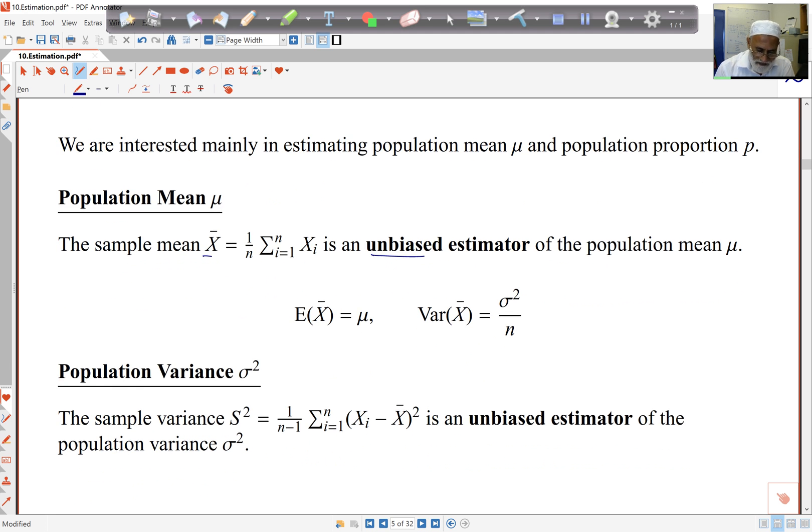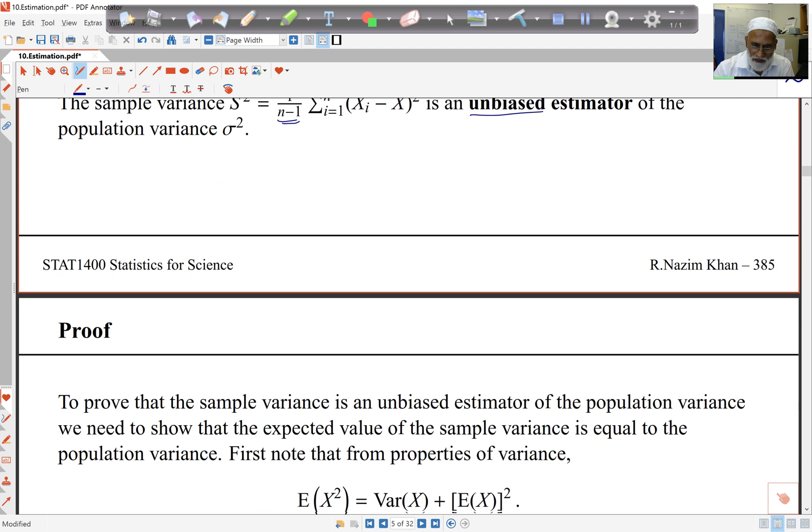The other one we know is the sample variance, 1 over n minus 1 times the sum of Xi minus X bar squared. This is an unbiased estimator. Now in the past we have divided here by n minus 1, and we didn't say why. The reason is with n minus 1 there, S squared is an unbiased estimator of the population variance sigma squared. And we'll have a quick look at the proof of this.